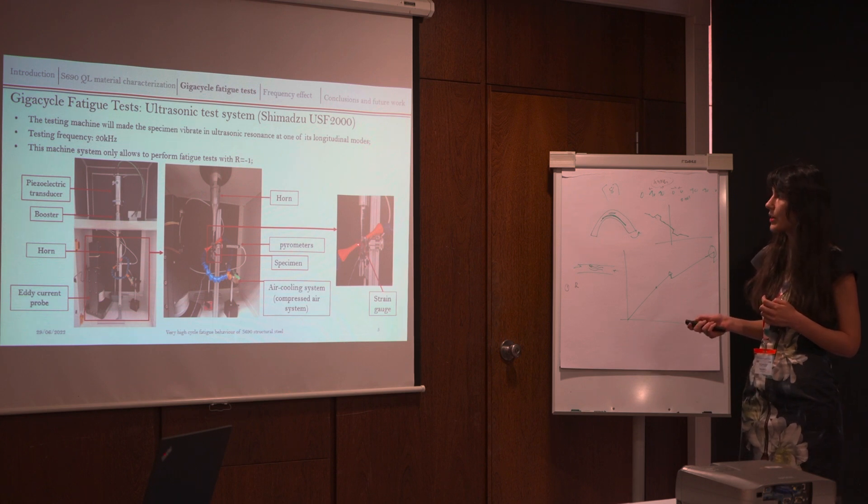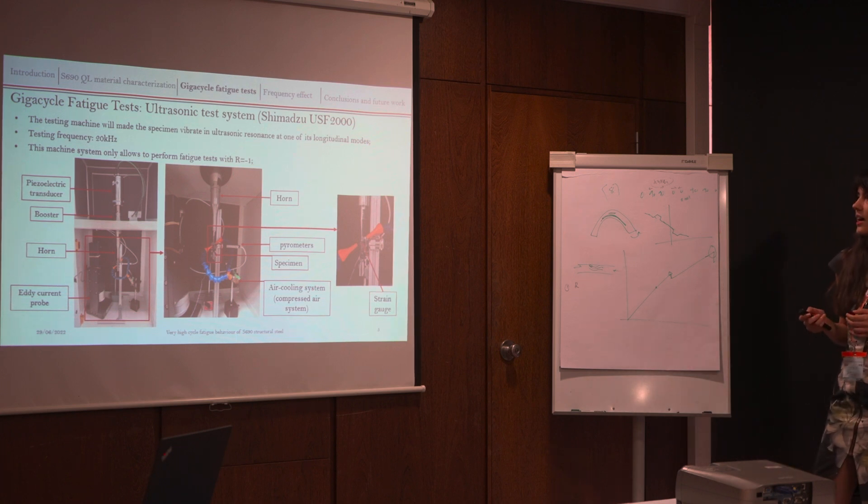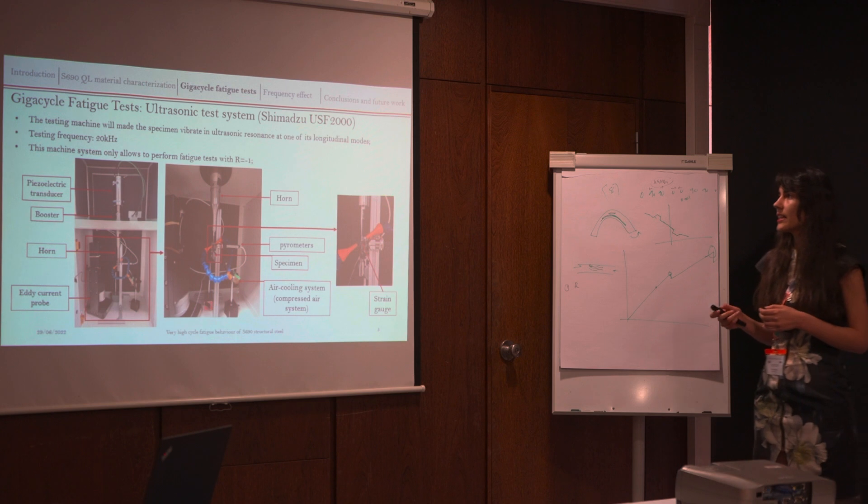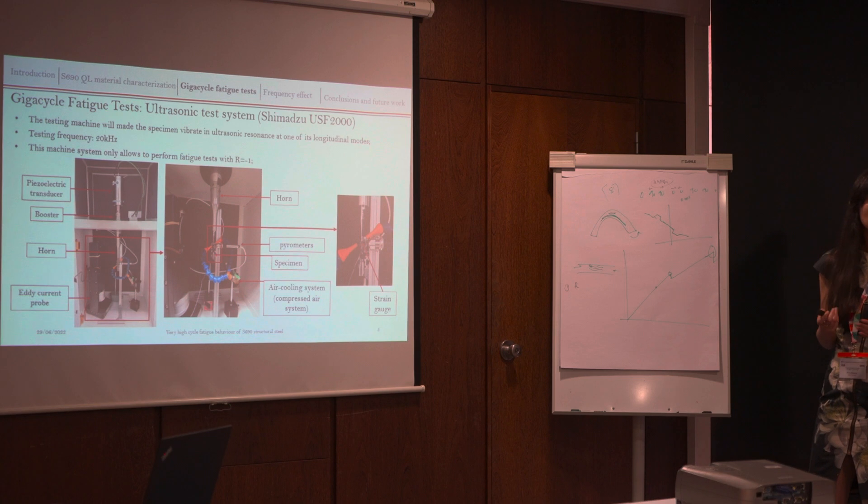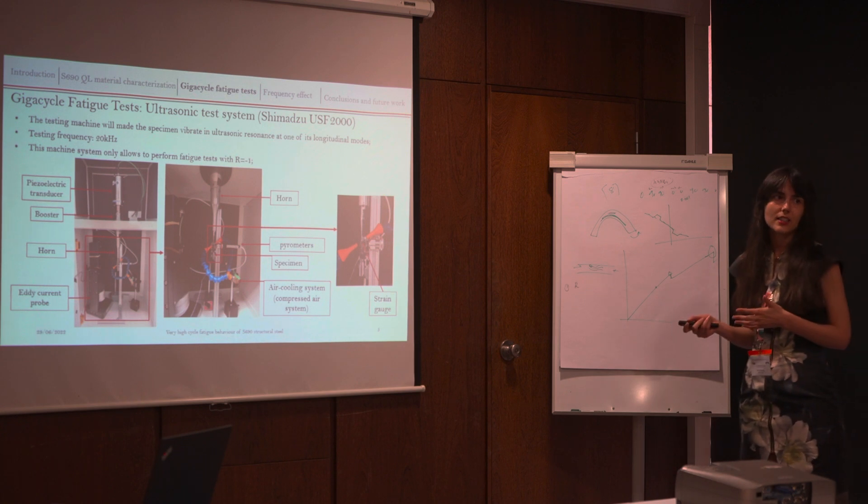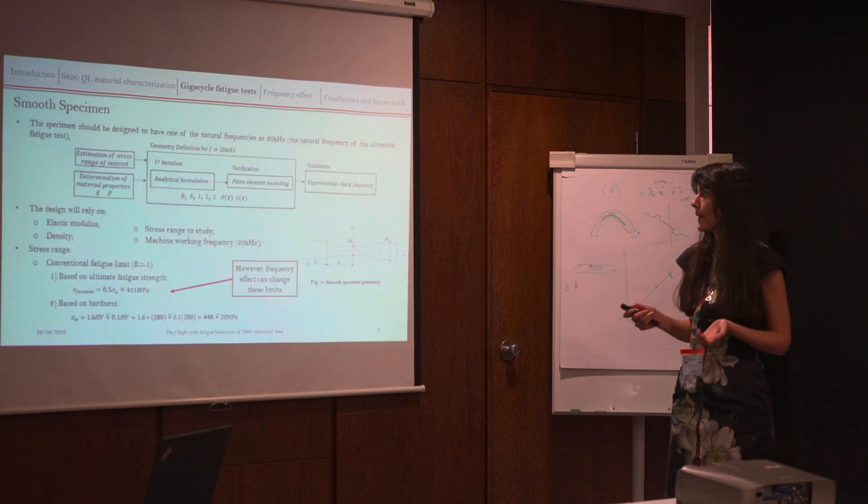And then you can see also here a strain gauge that we use to control and verify our stresses. This is a very interesting machine because it works in a different principle than a hydraulic machine. It makes the specimen vibrate at the resonant frequency of our machine, so we need to design it to vibrate at 20 kHz.